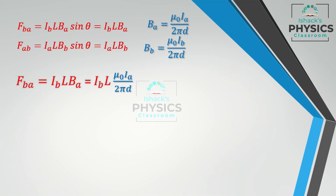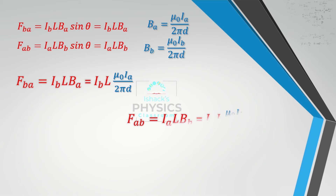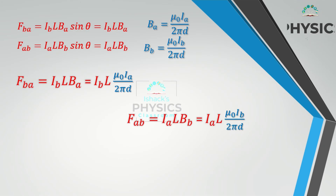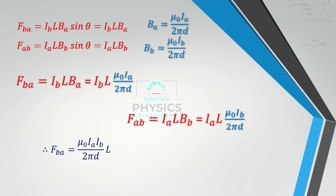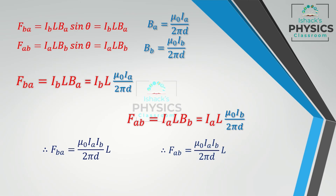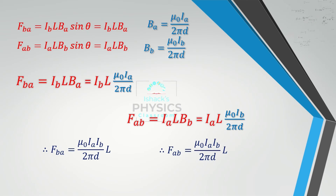Substituting: FBA = Ib × L × BA = Ib × L × (μ0Ia / 2πd), which gives FBA = μ0IaIb / 2πd × L. In a similar manner, FAB = Ia × L × BB = Ia × L × (μ0Ib / 2πd), giving FAB = μ0IaIb / 2πd × L.